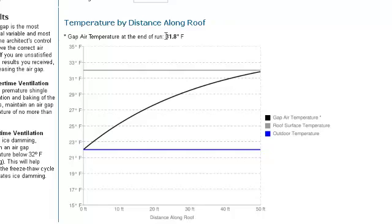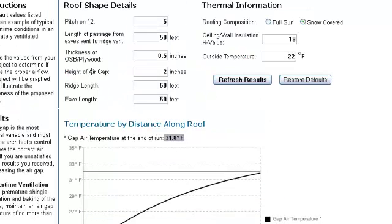And at the end of the run, we're only at 31.8 degrees Fahrenheit, which keeps us below freezing and eliminates our need to worry about ice damming. So, based on this information, we know that we're going to specify a vented nail base system that has an air gap height of at least 2 inches, as well as an intake vent and an exhaust vent that can accommodate those NFAs.